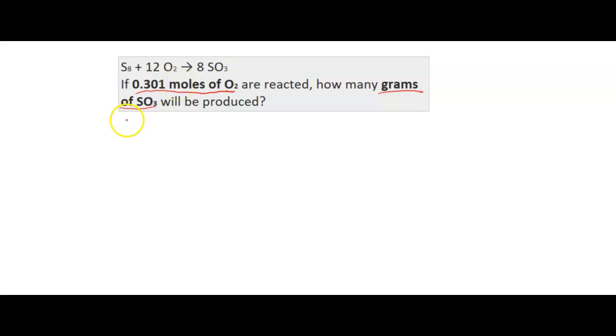So we have our moles of O2 as our starting amount. We need to get to SO3, but we can't go directly from moles of O2 to grams of SO3. We can only change either the unit or the compound. So we're just going to change the compound for now, go from moles of O2 to moles of SO3. After we've got our moles of SO3, then we can convert it to grams of SO3.